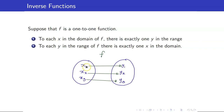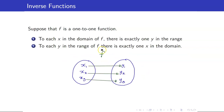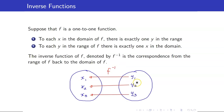That is, your graph looks something like this. The inverse function of f, denoted by f inverse, is the correspondence from the range of f back to the domain of f. That means that if this is your f, then your f inverse would just be the function wherein the inputs and the outputs are interchanged. So it will look something like this.